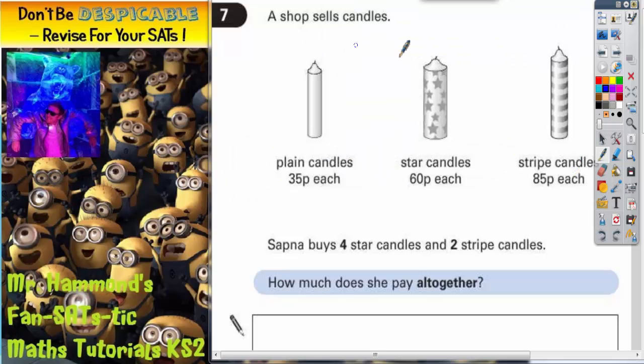Question number seven. A shop sells candles. We've got plain candles 35p each, star candles 60p each, striped candles 85p each.